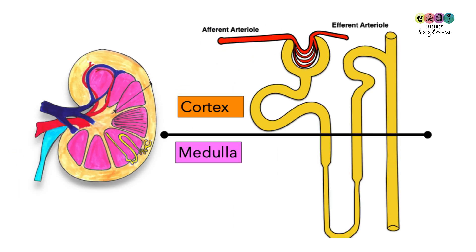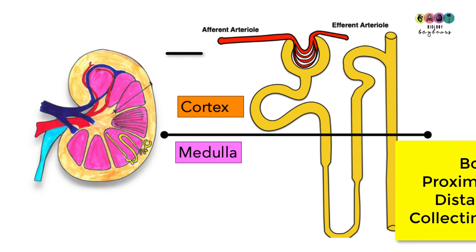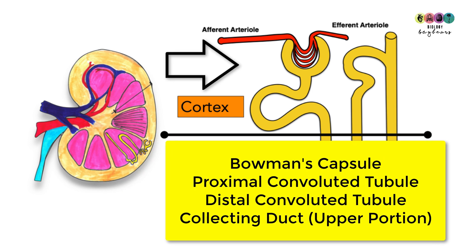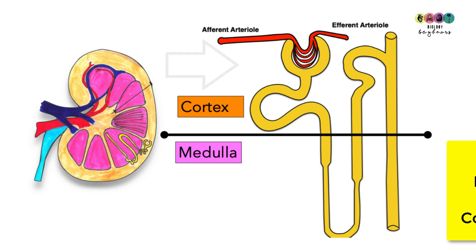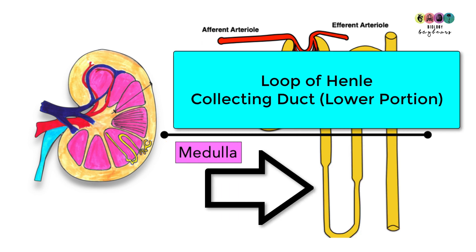You also need to know where in the kidney each part of the nephron lies. Drawing a line on your nephron diagram to show the cortex and medulla makes this easy. In the cortex: Bowman's capsule, the glomerulus, the proximal convoluted tubule, the distal convoluted tubule, and the upper part of the collecting duct. In the medulla: the loop of Henle and the lower part of the collecting duct.